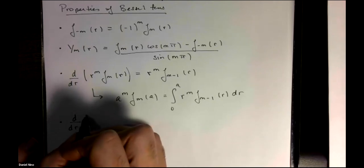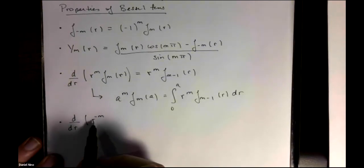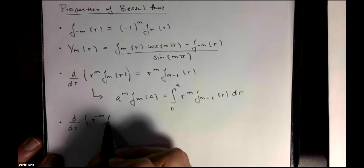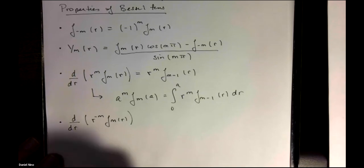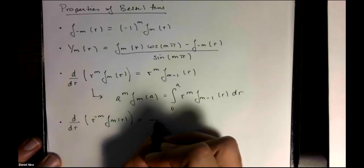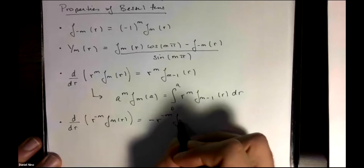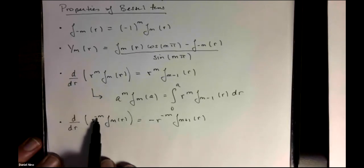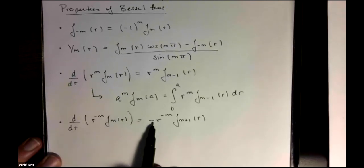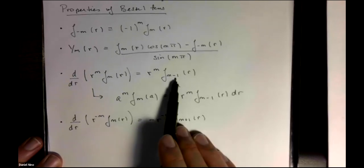Another important property is for the case where r is raised to the minus m with a Bessel function of order m. You pick up a negative sign, the minus m remains there, and you move up an order in the Bessel function. So the contrast between these two is you have a negative exponent over here, you pick up a minus sign, and your order moves up by one in contrast to here where the order was reduced by one.